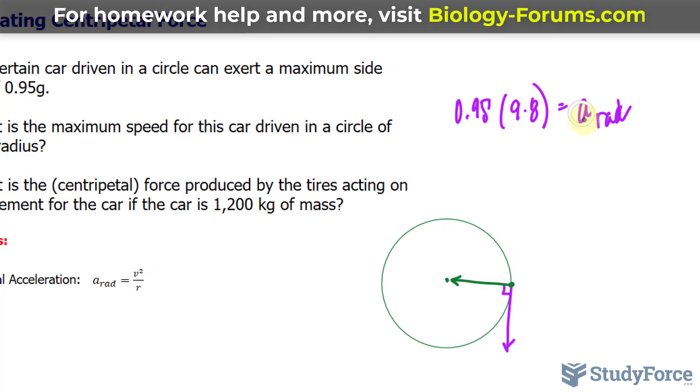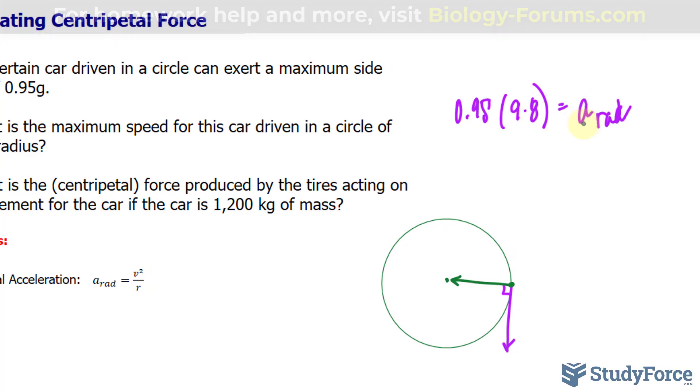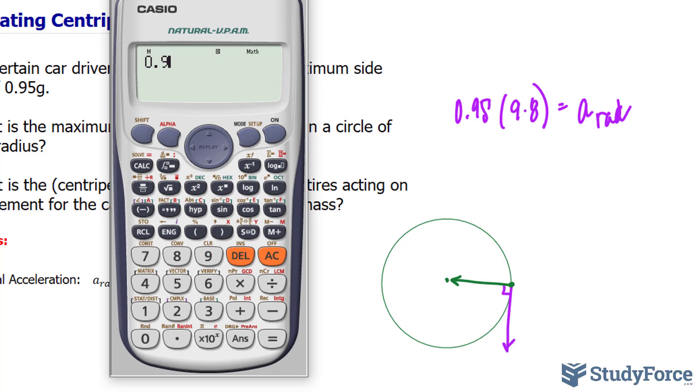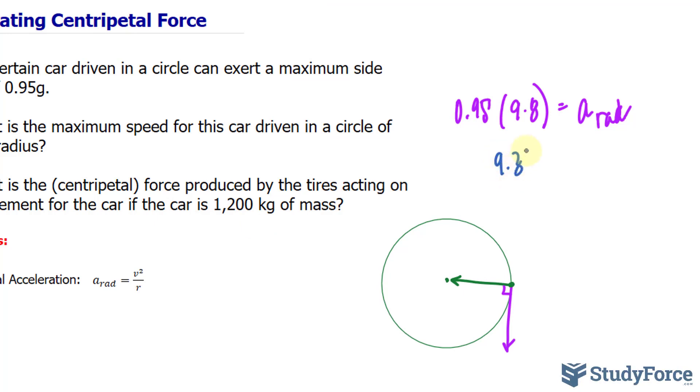Or in some textbooks, they simply write down a_c in relation to centripetal acceleration. So we have 0.95 times 9.8. This gives us an acceleration of 9.31 meters per second squared.